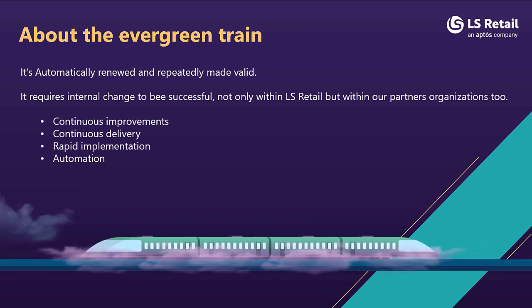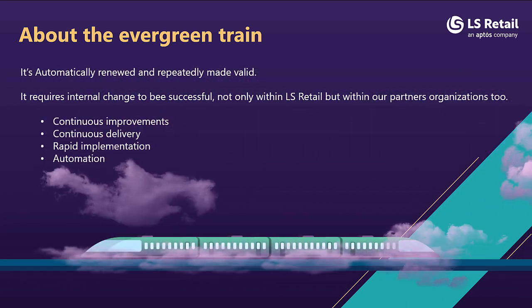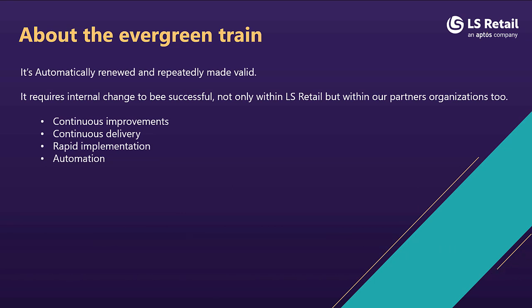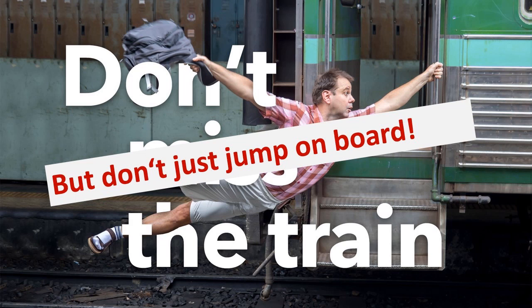The evergreen train, or what we call cloud or SaaS, is all about continuous improvements, continuous delivery, rapid implementation, and automation. We don't want you to miss the train, but we don't want you to just jump on board without any preparation. Therefore, we are having this session to hand over the knowledge and best practices for LS Central in SaaS.